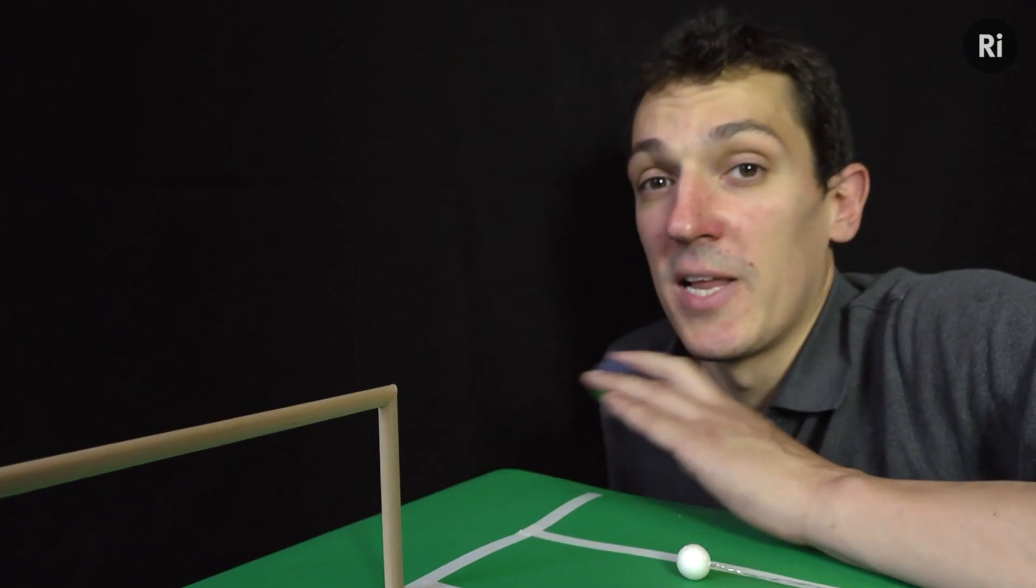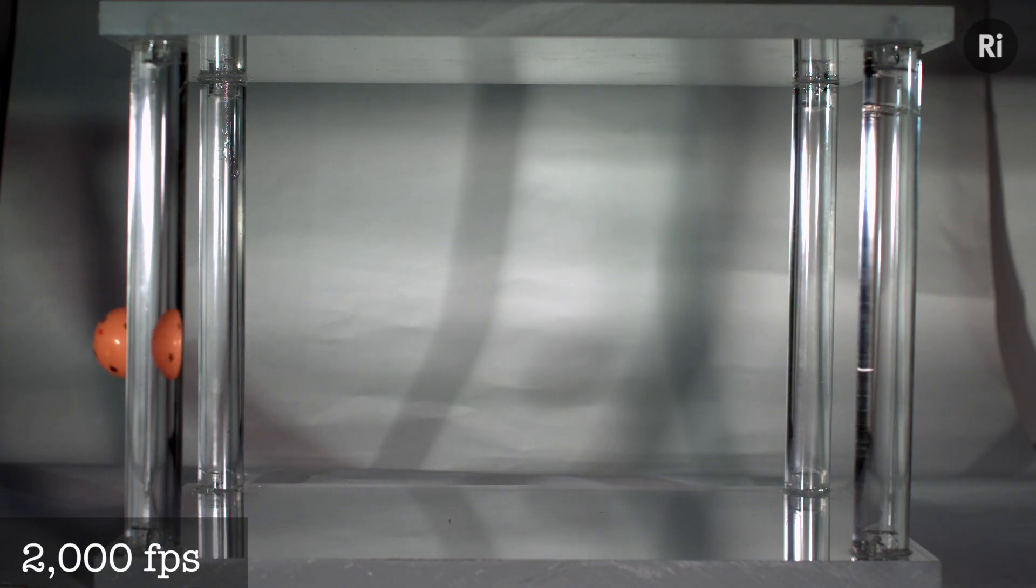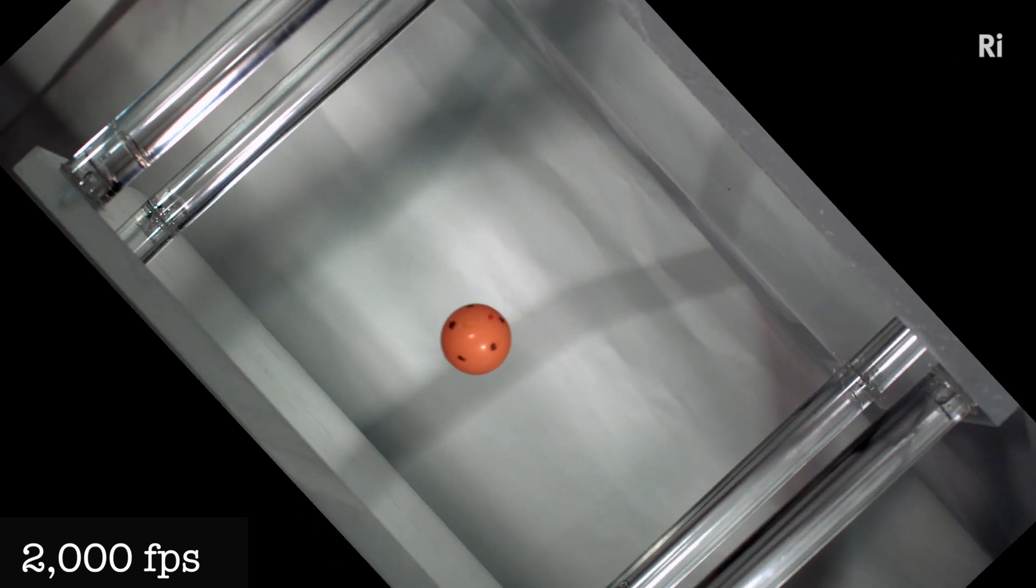Now if we slow that down, we can really see what's going on. Here it is at 2,000 frames a second. Let's flip it upside down so it corresponds a bit better to our goal space.